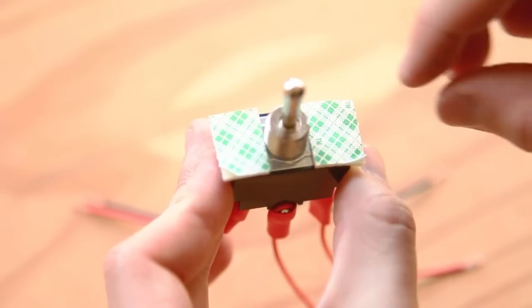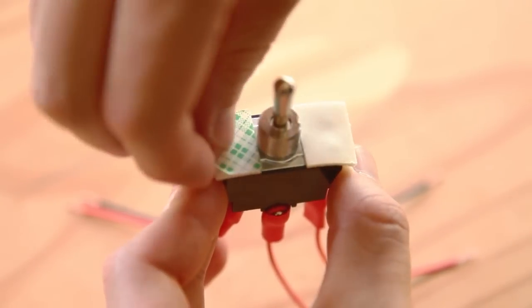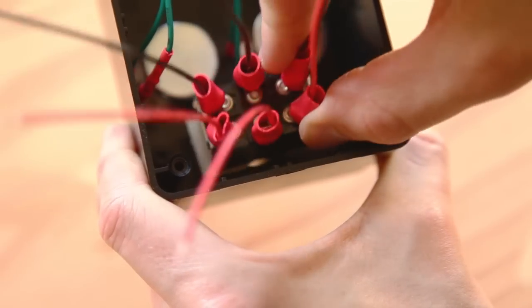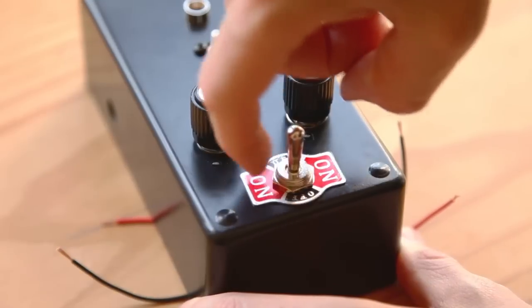To keep the switch from rotating in its mounting hole, stick two small pads of double stick foam tape to the top. Stick the switch into the mounting hole, slip the label plate over the thread shaft, and then tighten the nut.